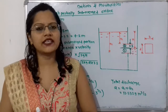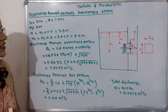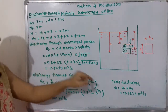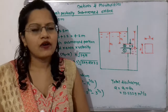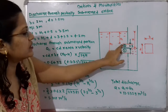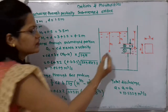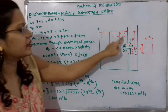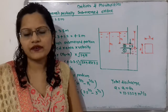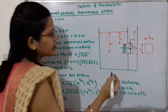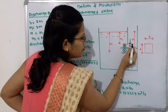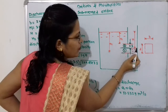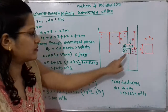Let us first understand the diagram as per the given data. For this rectangular orifice, width B = 2 meter and depth D = 1.2 meter. On one side of the orifice, the top edge has a distance from the free surface of water — we call this h1, which is equal to 3 meter. On the other side of the orifice, the water level is 0.5 meter below the top edge. So the top edge and the water level have a distance of 0.5 meter between them.